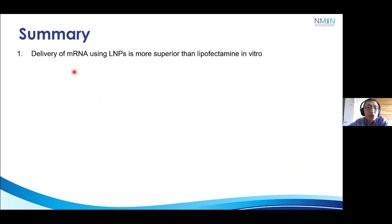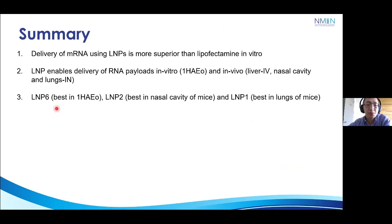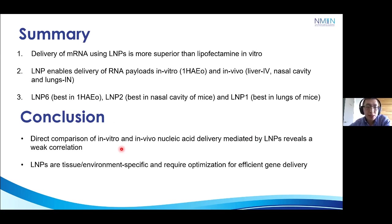In summary, the delivery of mRNA using LNPs is superior to Lipofectamine in vitro. We also showed that LNPs can enable delivery of the RNA payload in vitro and in vivo in the liver, nasal cavity, and lung structures. Importantly, performance depends on the helper lipids — LNP-6 works best in vitro, LNP-2 works best in the nasal cavity, while LNP-1 and LNP-6 worked best in the lungs. Direct comparisons of LNPs for in vitro and in vivo delivery revealed very weak correlations, possibly because LNPs are tissue and environment specific, and therefore require optimization for efficiency and delivery.